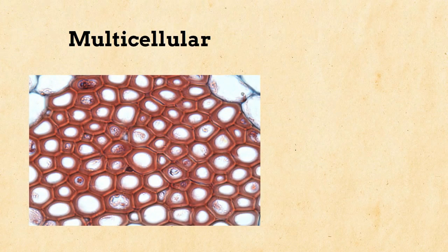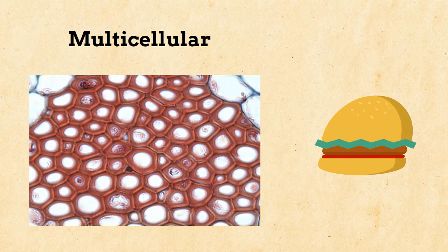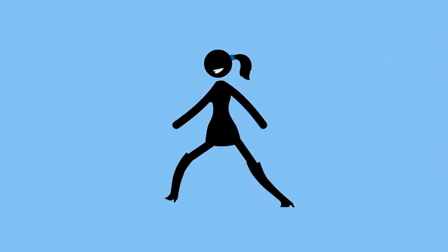They are all multicellular organisms. All are heterotrophs or in other words they cannot produce their own food, they must eat another organism. And finally almost all animals can move.